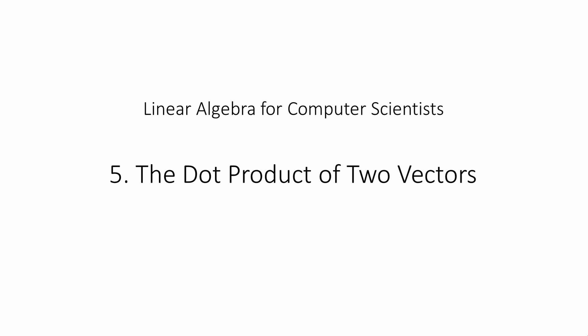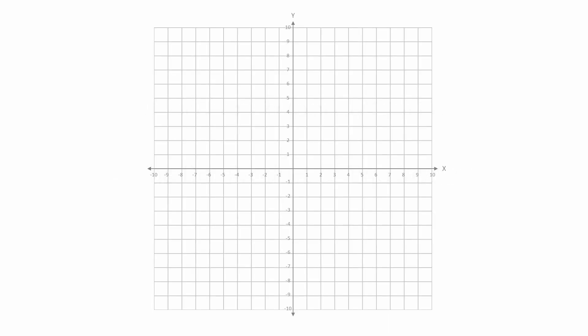Let's look at some examples. Here's a two-dimensional vector called A, with values 3 and 5, and this one is called B, with values 8 and 2. To calculate the dot product, we multiply together the corresponding components of each vector, in this case 3 times 8 and 5 times 2. Then we add the individual products together. The dot product of these two vectors is therefore the scalar value 34.